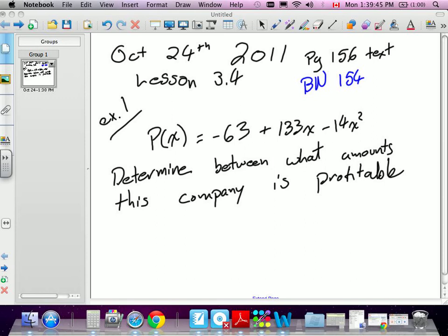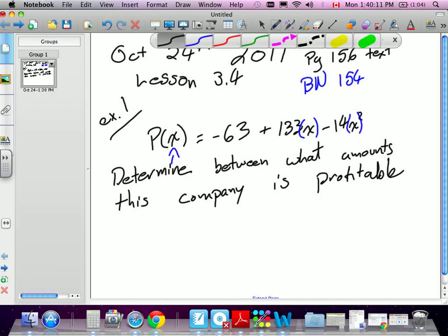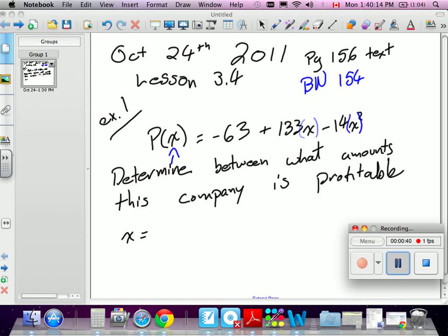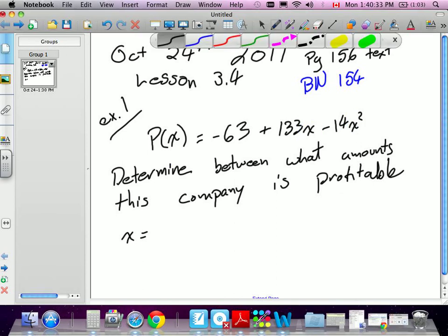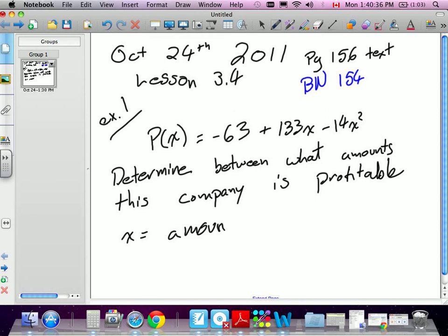The first example gives us an equation that represents a company's profit margins. This equation lets them know how much money they're going to make depending on how much of a product they sell. We're going to say that this company sells skateboards. So x is the amount of skateboards they sell in thousands.